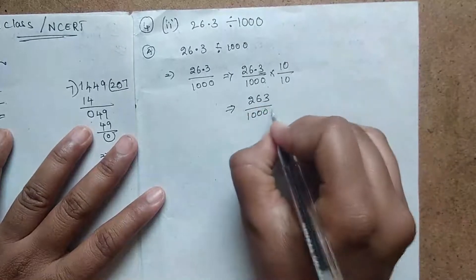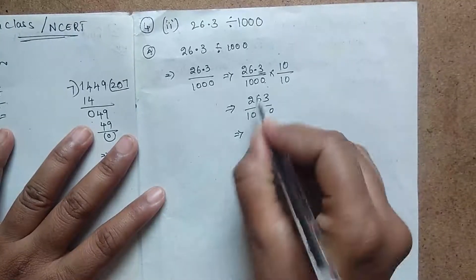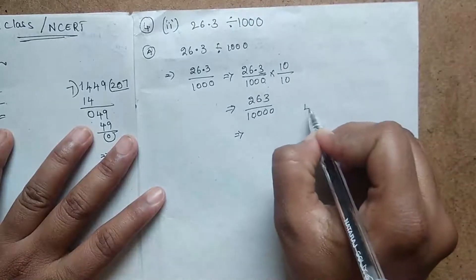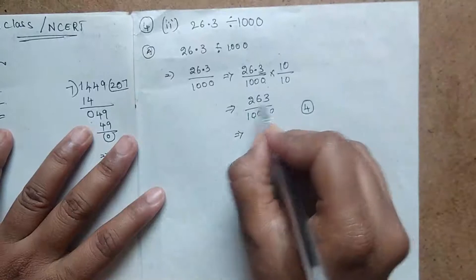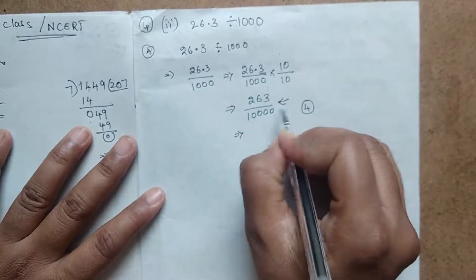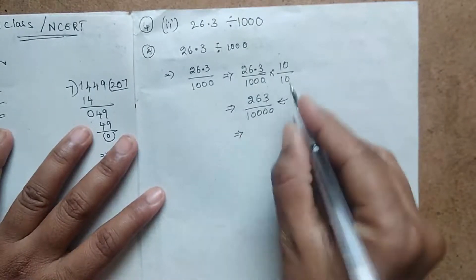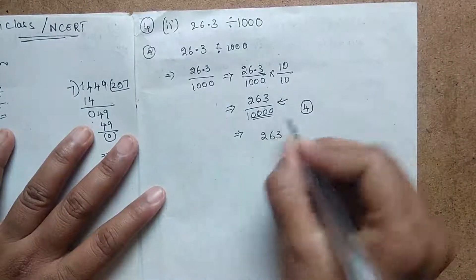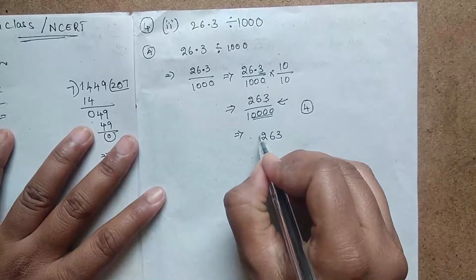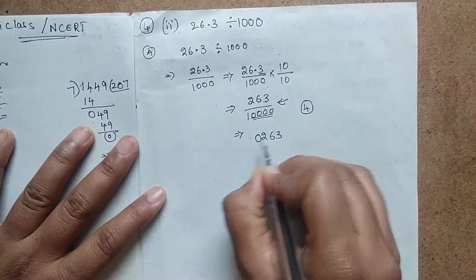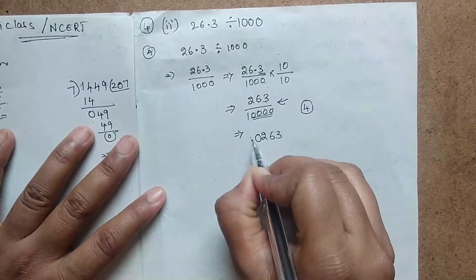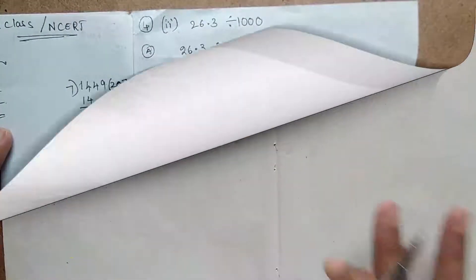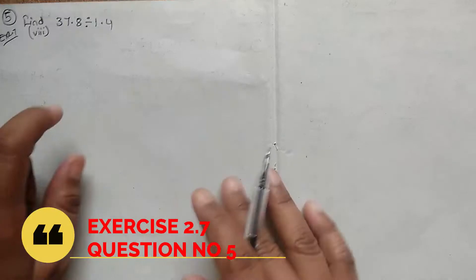...1000 into 10, which is 10,000. Now we have to count: 1, 2, 3, 4 — there are four zeros in the denominator. We have to place the decimal point from the right: 1, 2, 3. Since we have four zeros, we have to place after four points, and add a zero in front of the number. So put a point like this — 0.0263 — this is the answer for this question.